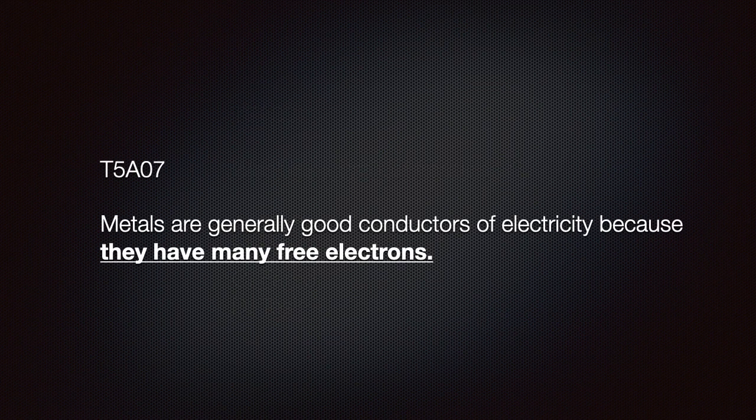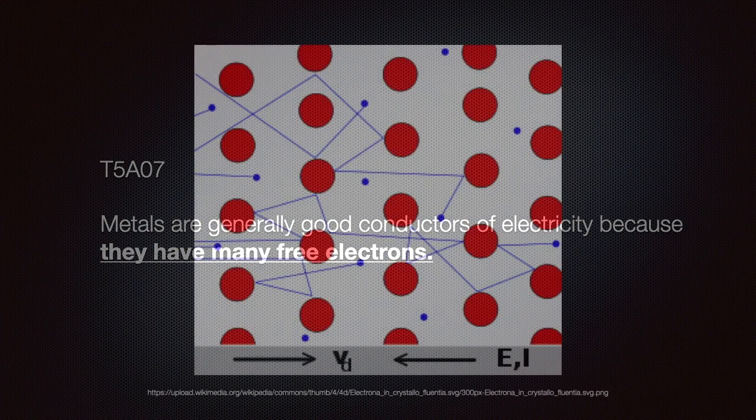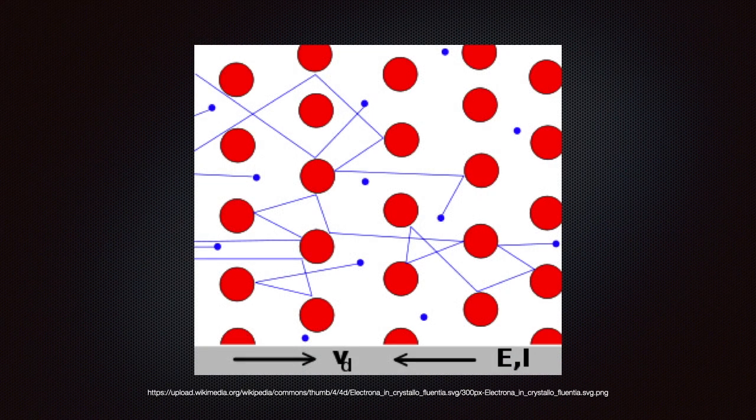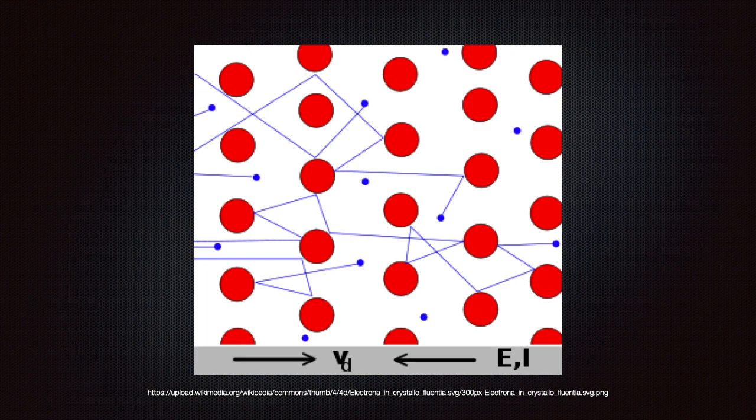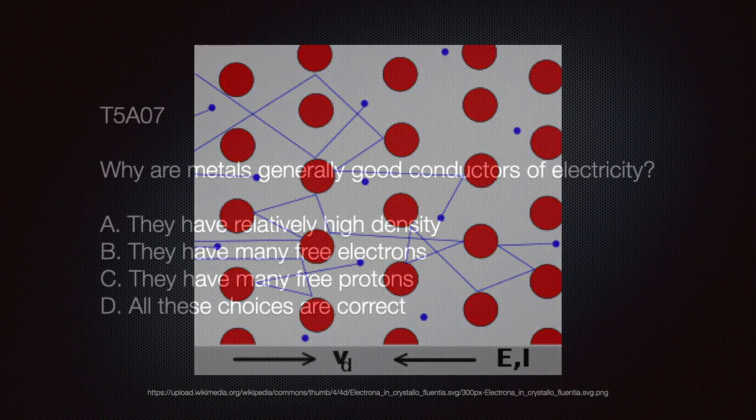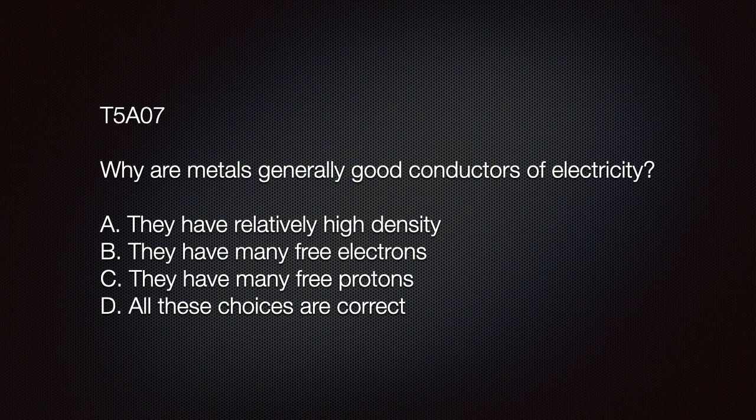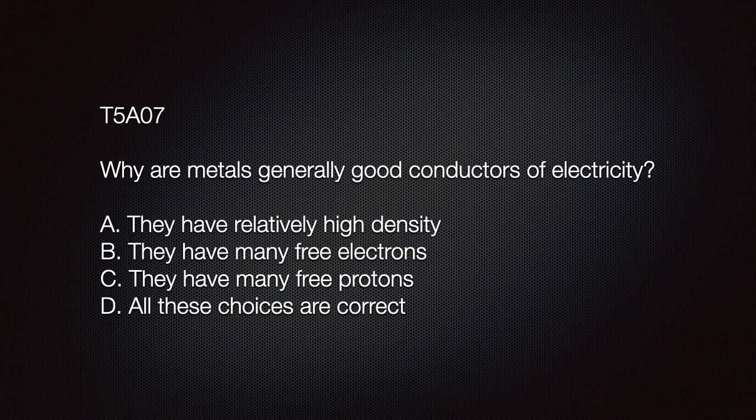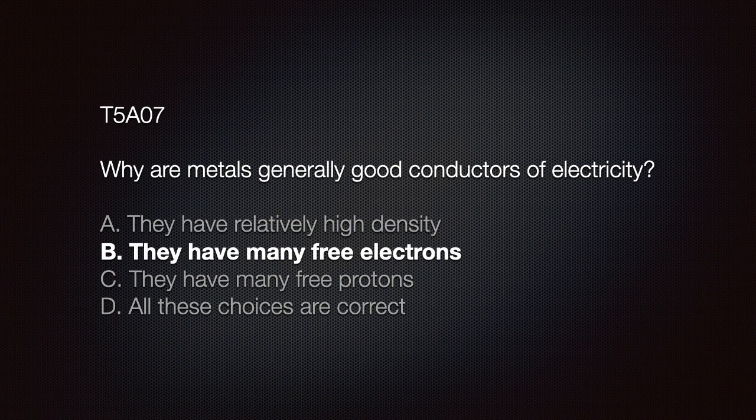Understand that metals are generally good conductors of electricity because they have many free electrons. In physics, a free electron is one that is not attached to an atom or a molecule and is free to respond to outside forces. Metal has free electrons, making it the ideal conductor of electricity. Your test may have this question. Why are metals generally good conductors of electricity? A, they have a relatively high density. B, they have many free electrons. C, they have many free protons. Or D, all these choices are correct. The correct answer, of course, B, they have many free electrons.